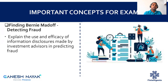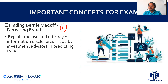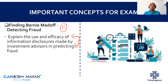The last chapter of this book is Finding Bernie Madoff. This is a case study about how exactly the market can identify frauds and how we can make sure we don't fall for such things. This completes the discussion on important concepts for each chapter for the exam.